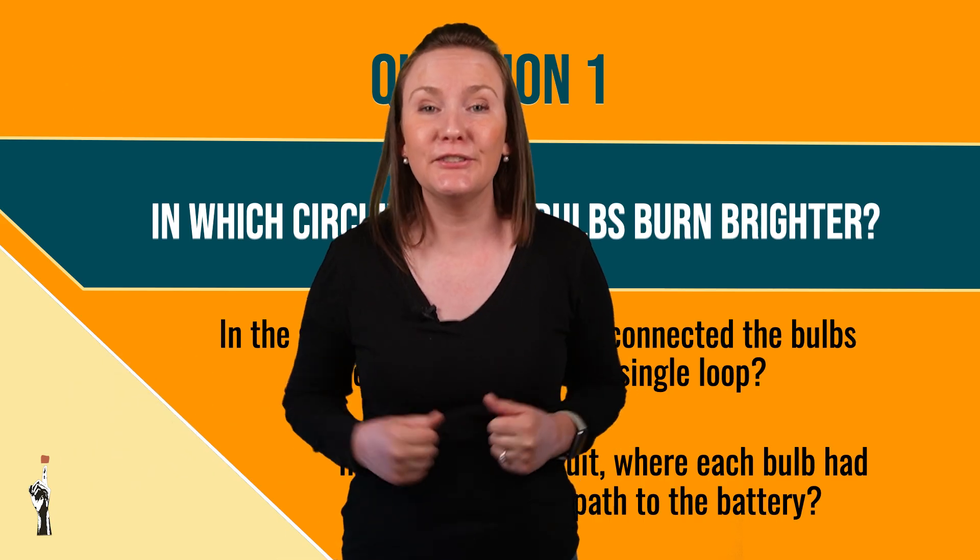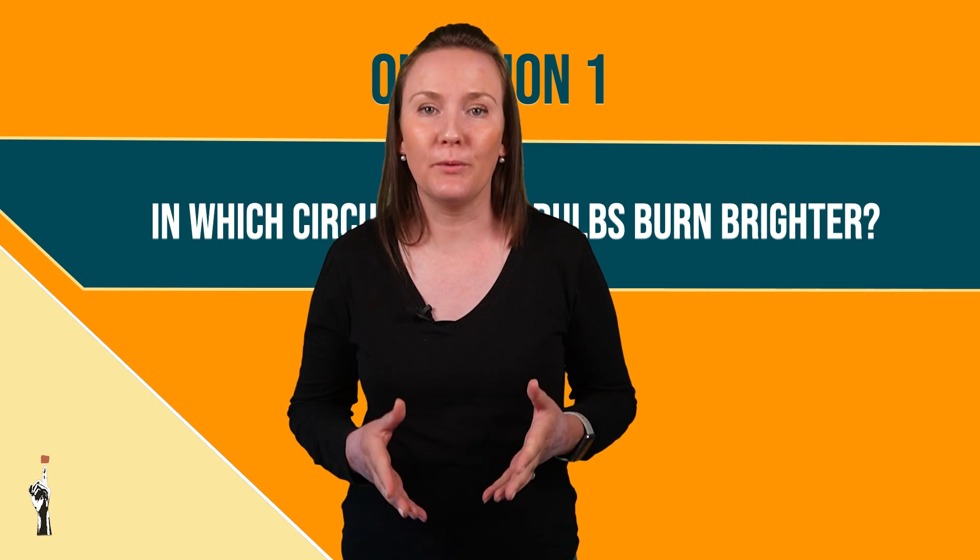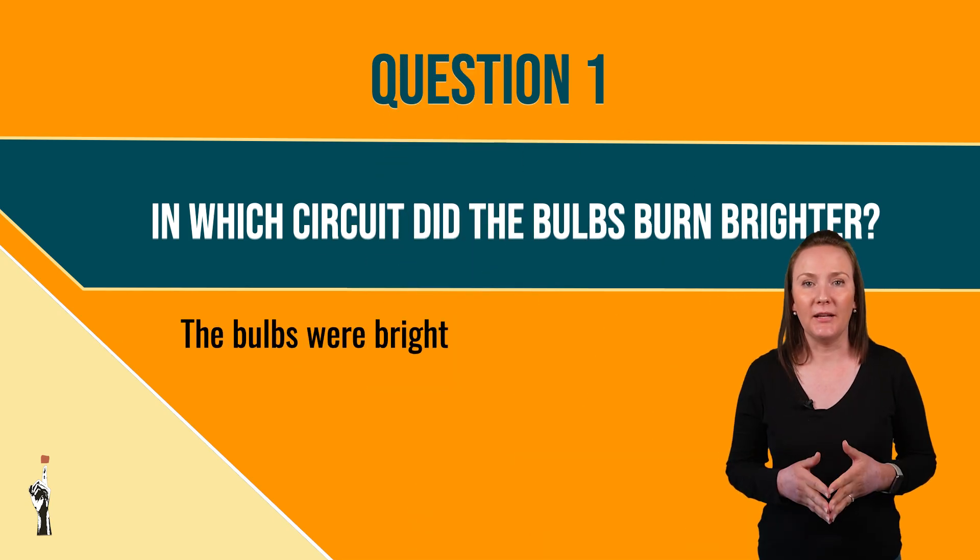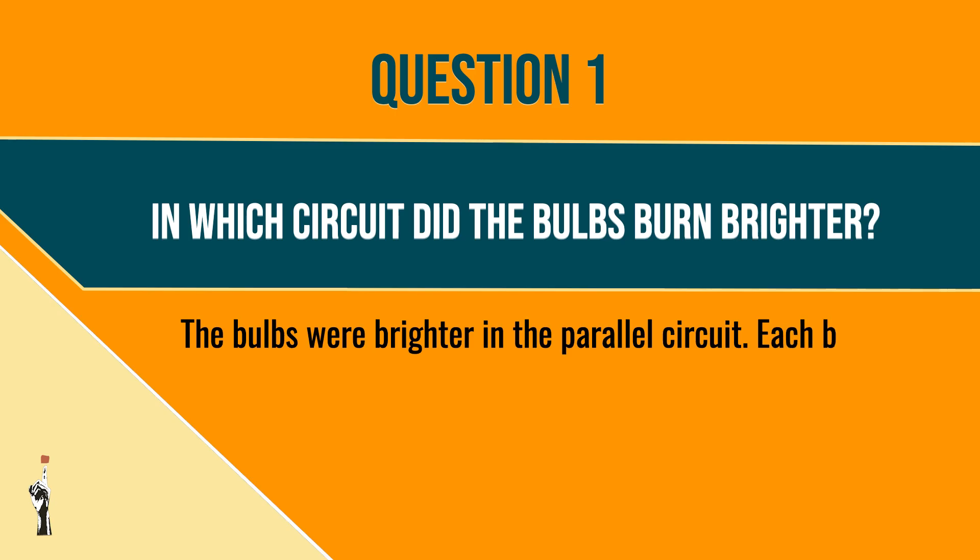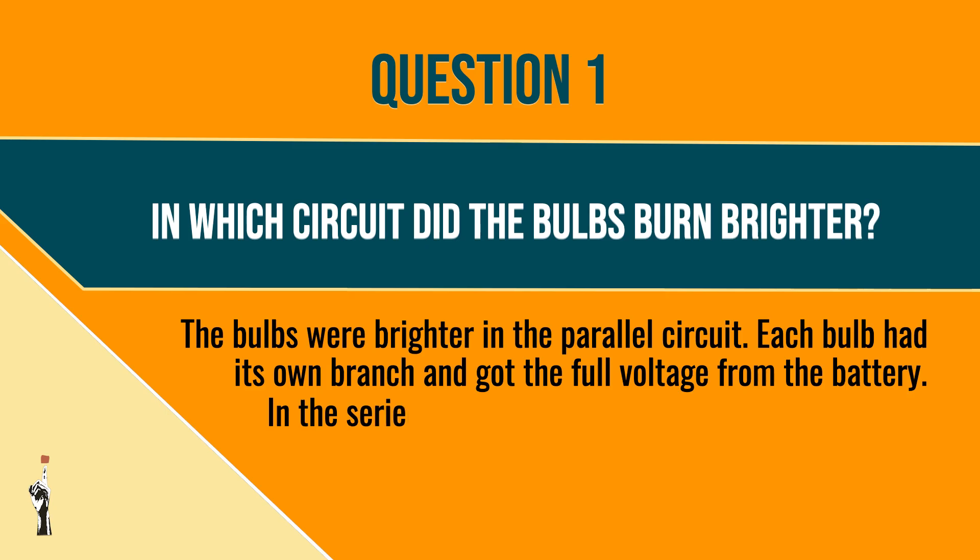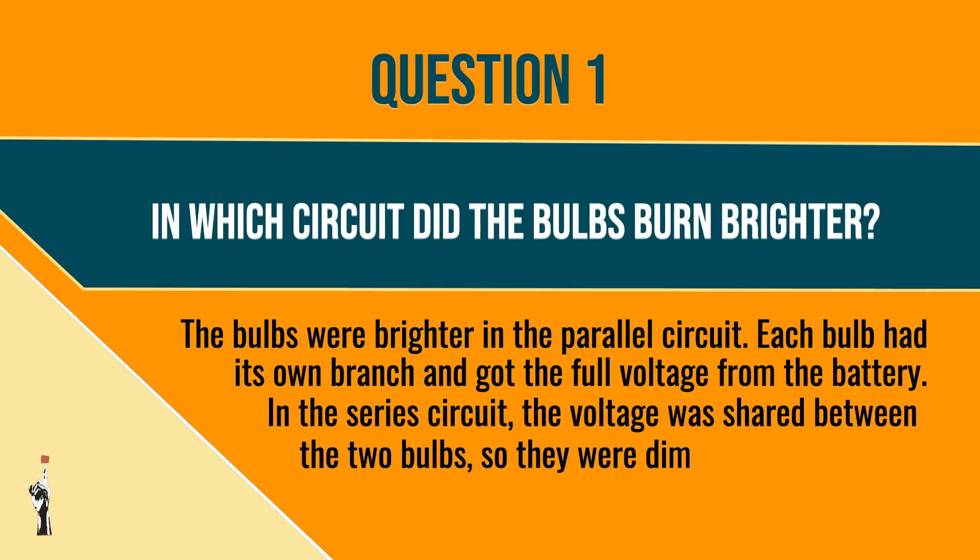So, grade eights, how did you do? For question one, the bulbs were brighter in the parallel circuit. Why was that? Each bulb had its own branch and got the full voltage from the battery. In the series circuit, the voltage was shared between the two bulbs, so they were dimmer.